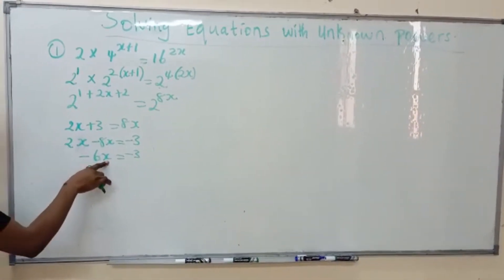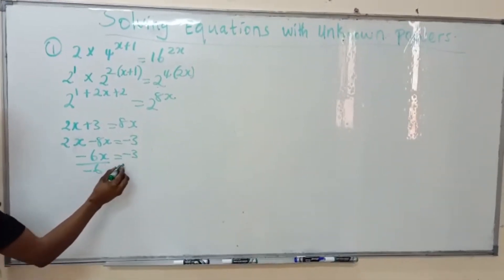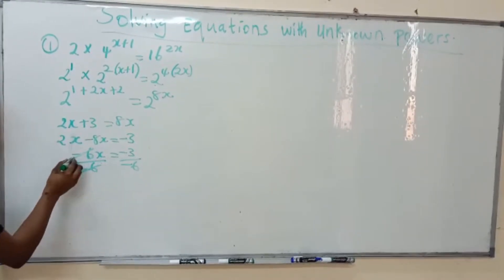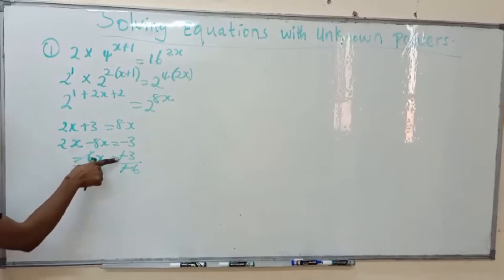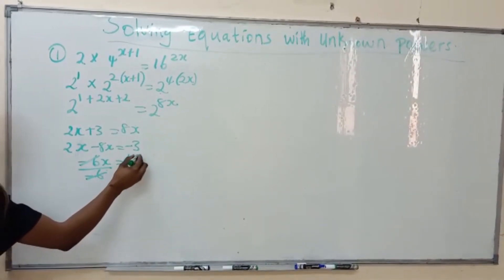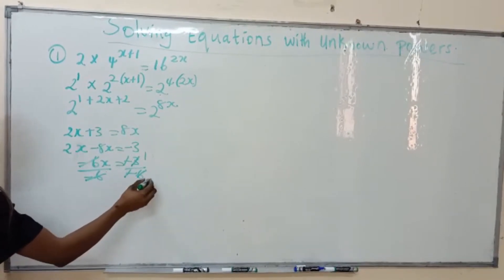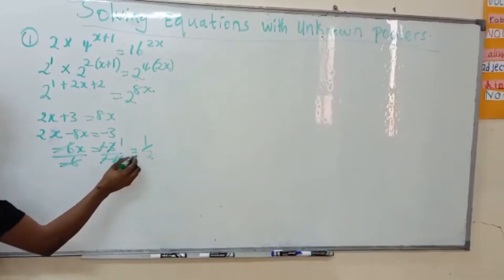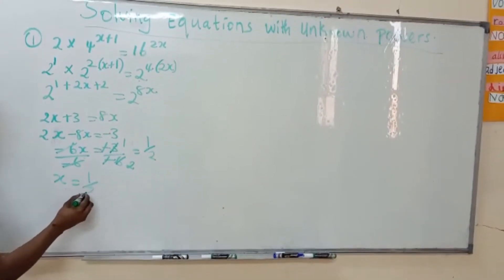We are looking for x, so we divide everything by minus 6. The minus cancels with minus because minus divided by minus is plus. We have 3 and 6: 3 goes into 6 two times. So x equals 1 over 2.